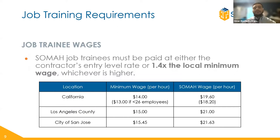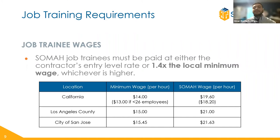Regarding job training wages, contractors must pay job trainees either the contractor's entry-level rate or 1.4 times the local minimum wage where the SOMA project takes place, whichever is higher. For cities and counties without a local minimum wage ordinance, the California minimum wage is $14, and the minimum SOMA wage will be $19.60 per hour. It is the contractor's responsibility to verify the local minimum wage in the city and county where the SOMA property is located and pay the appropriate SOMA wage. SOMA wages will be verified on the job training affidavit submitted in the incentive claim milestone. Importantly, contractors must pay trainees from their own budget — wages are not paid from SOMA funds.